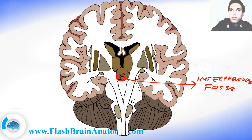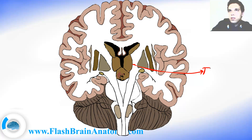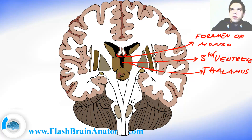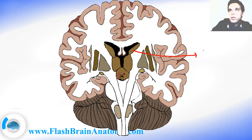And above the interpeduncular fossa we had the thalamus. Between the two thalami, from the right and the left side, there is the third ventricle. Then we had the foramen of Monroe connecting the ventricles. And of course we may not forget the lateral ventricle. And this structure over here was called the caudate nucleus.